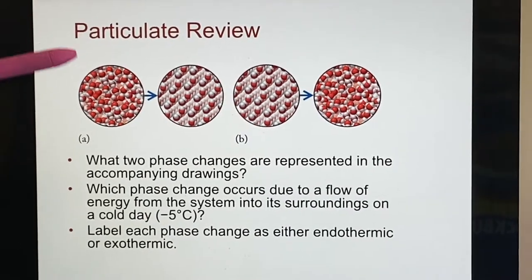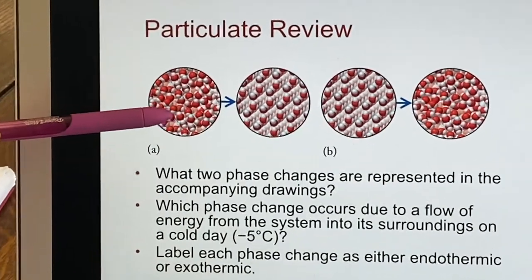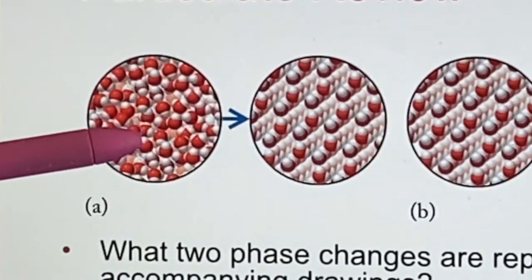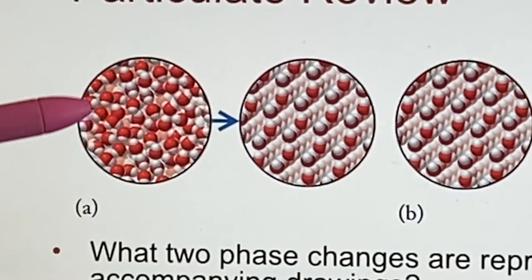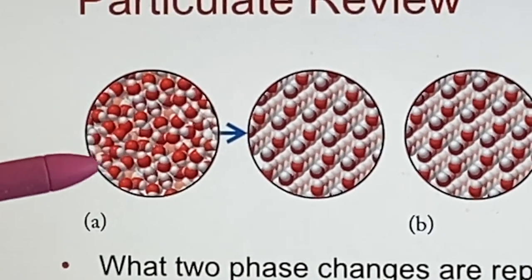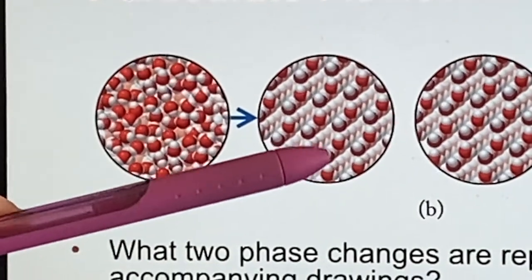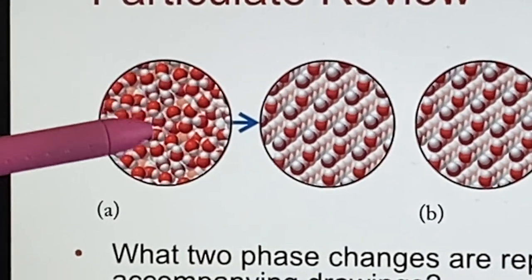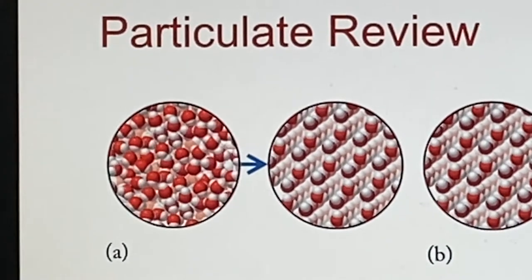We have some phase changes here in A and in B. If we look at this, we see that both of these are condensed states. They are very close together, the particles. But in this case, they are not well-ordered and they're probably tumbling over each other. But of course, we don't have a moving picture here, so we're just taking a snapshot. And here they're in nice orderly patterns. So this is apparently going from liquid to solid. And of course, we would consider that to be freezing.